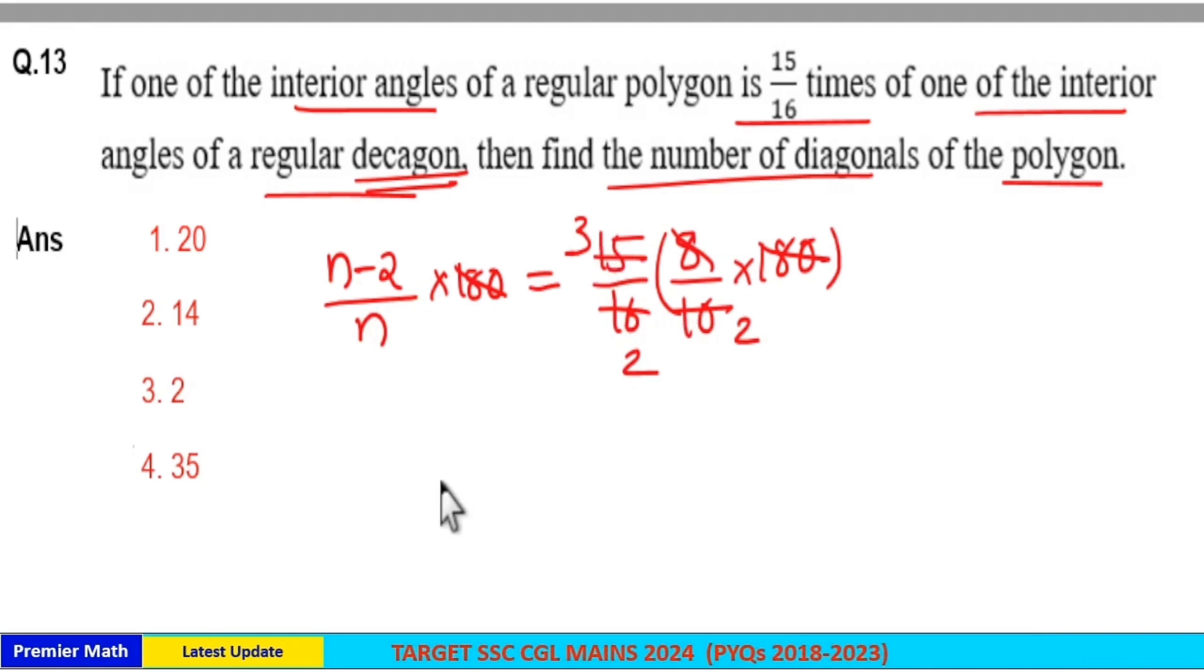Cross multiplying: 4n - 8 = 3n, which means n = 8.